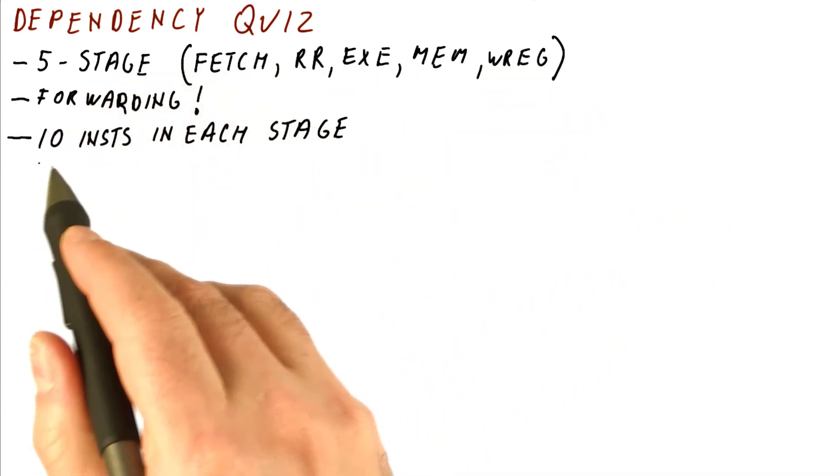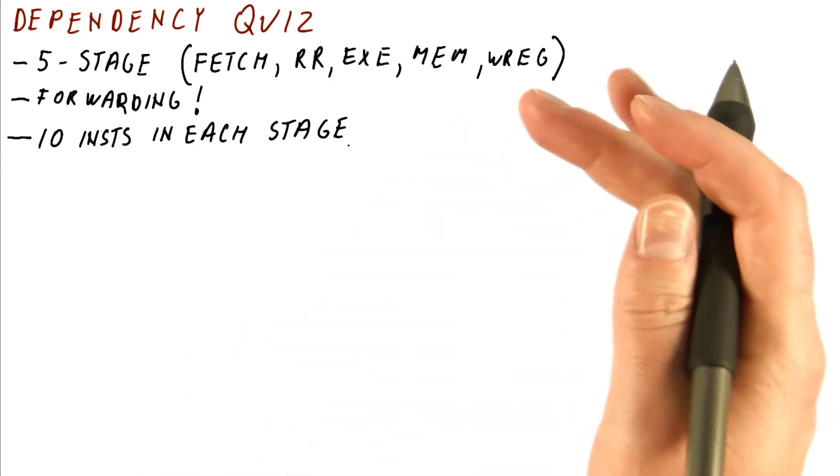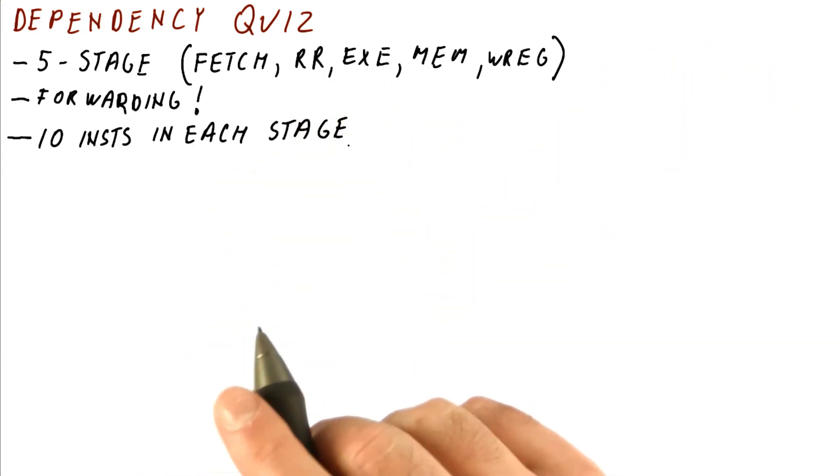And finally, let's say that this processor can execute 10 instructions in each stage. So theoretically, it could in one cycle fetch 10 instructions, then decode all 10, then execute all 10 if there are no dependencies and so on. So in five cycles, it's going to execute all 10 instructions.